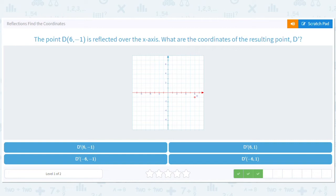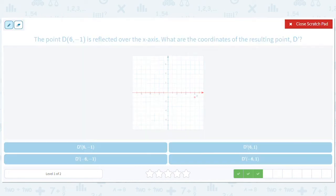(6, -1) is reflected across the x-axis. Across the x-axis, leave the x the same, make the y opposite. So (6, -1) goes to (6, 1).